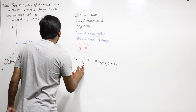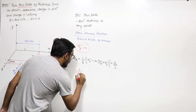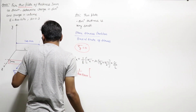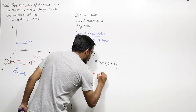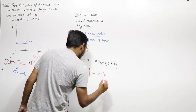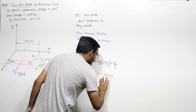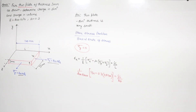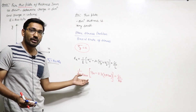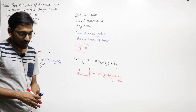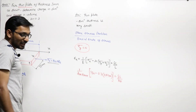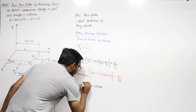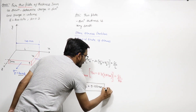Putting in the values: 1 upon 200 giga Pascal, converted to mega Pascal that is multiplied by 1000, times (sigma_x = 150 minus 0.3 times (sigma_y = 0 plus sigma_z = 100)), equals change of length upon original length of 100 mm. Solving this, the change in length delta L = 0.06 mm.